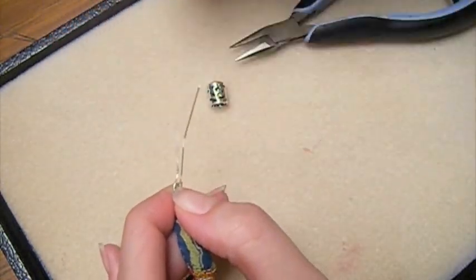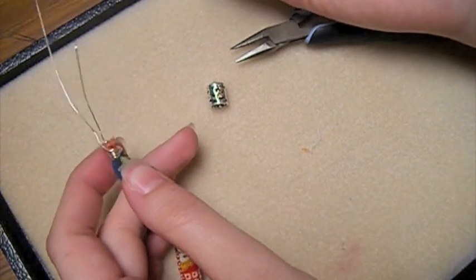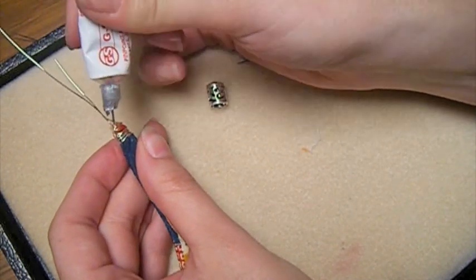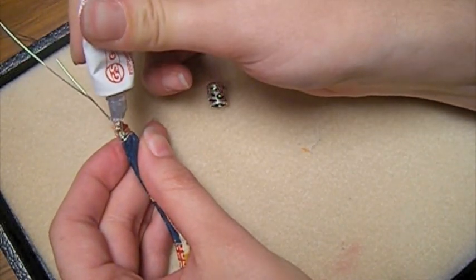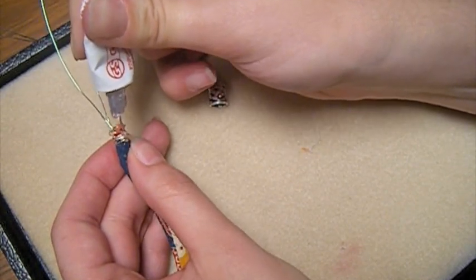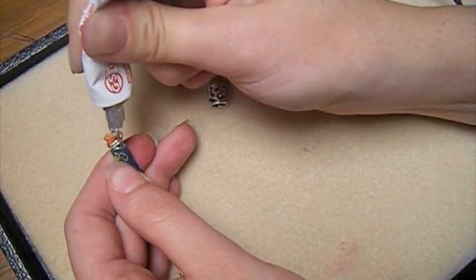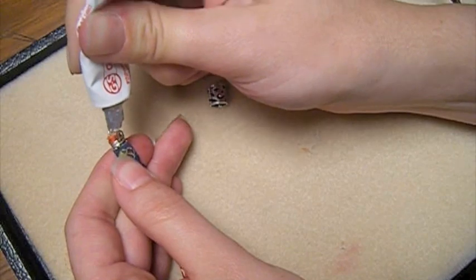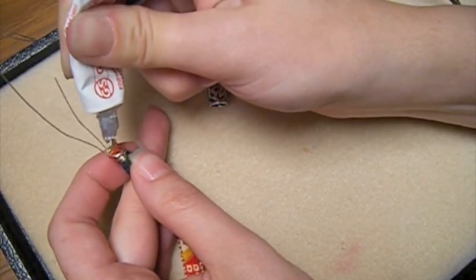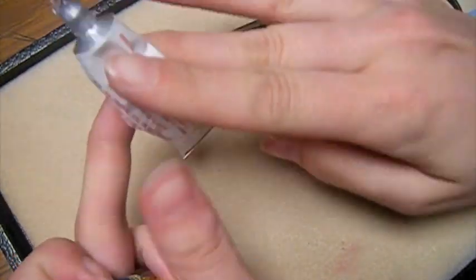So you can take your cap off. And then this is the part for extra security where you will glue. We prefer GS Hypo Cement because of the fine tip makes it easy to apply the glue without having it get all over the place. And you want to go around the sides of the wrap so that it glues inside of the cone. But not so much that it gushes out the side. A little goes a long way. And then get the top to keep it from fraying over time.